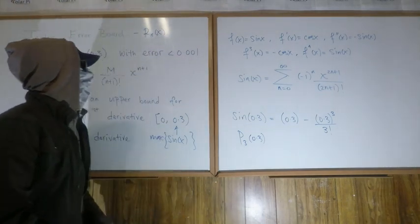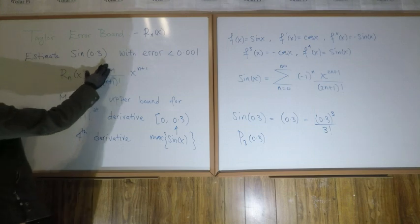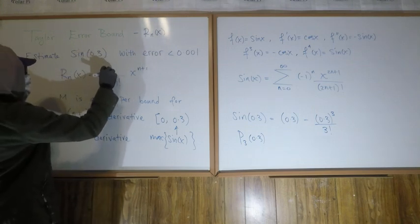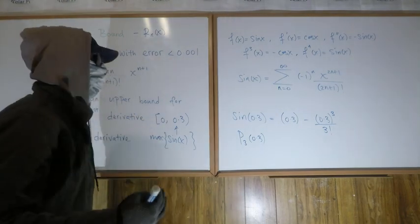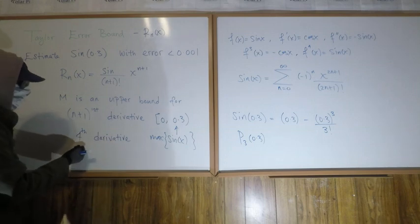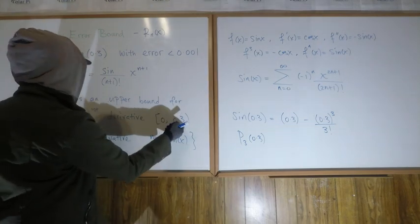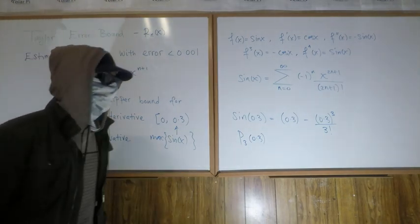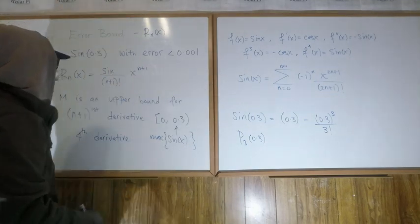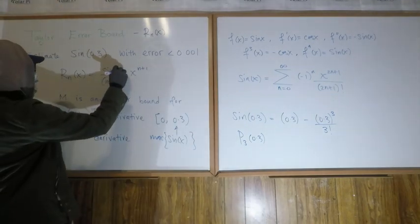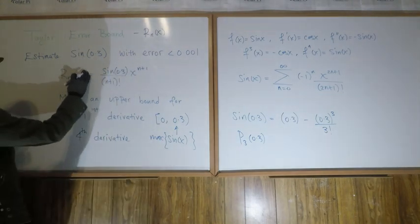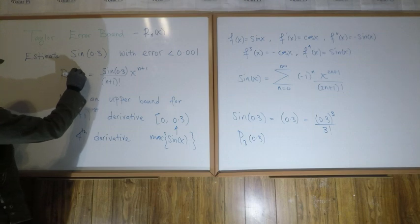But we're working with sine. The maximum value that sine attains in this interval is sine of 0.3, so that's what M is — M equals sine of 0.3. Sine is an increasing function in this interval, therefore it attains its maximum value at the right end of the interval. Since the fourth derivative is sine x and sine x has its maximum on the right end, M equals sine of 0.3.